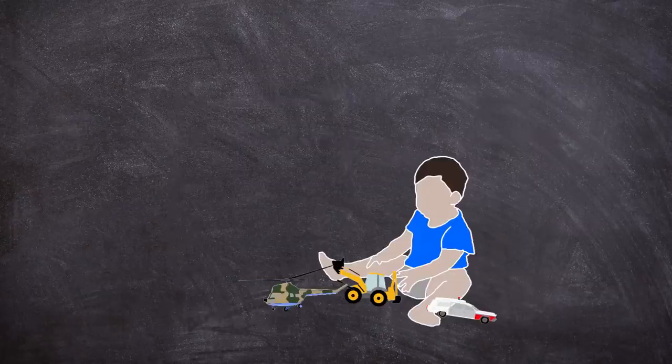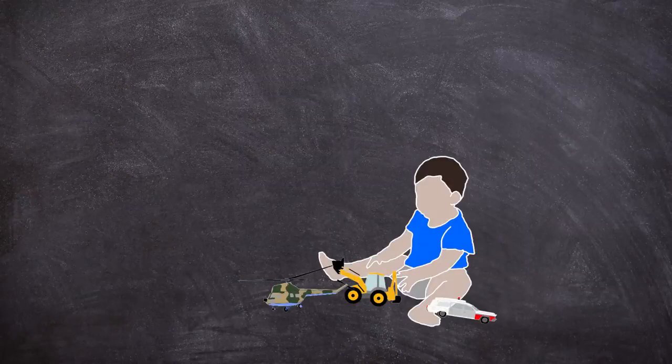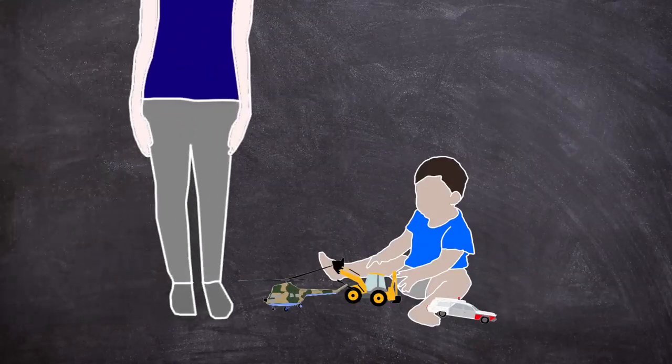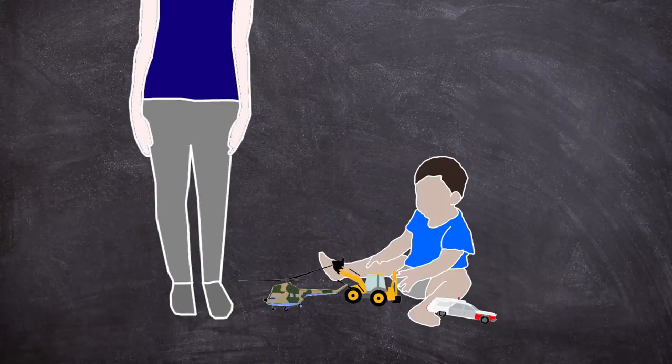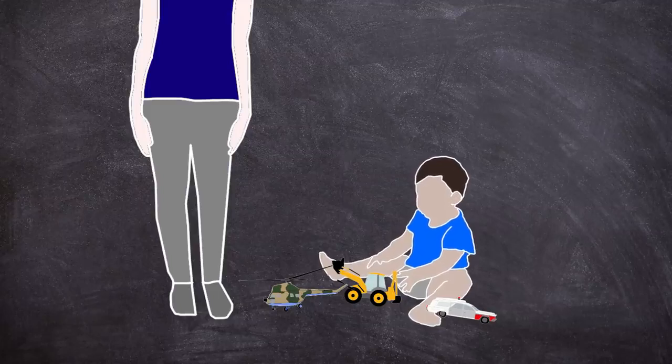The next part of the experiment involved the child being allowed to play in the second playroom with some toys. To create frustration after around 2 minutes the experimenter would tell the child they would have to put the toys down because they were reserved for other children. They were told they could instead play with the toys in the experimental room.